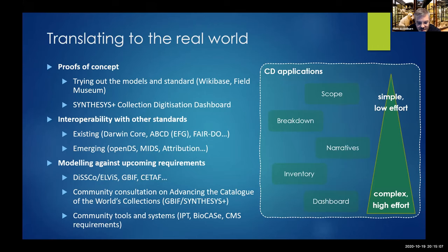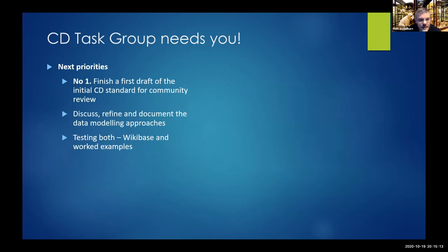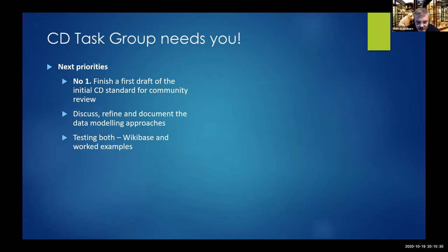Another important consideration is how collection descriptions might be better supported by institutional collection management systems. The clear message from the task group working session last month was that the number one priority is to get a first draft of the standard terms and definitions done and ready for wider community review — that will be the main focus of the next few months, with a target of early 2021.